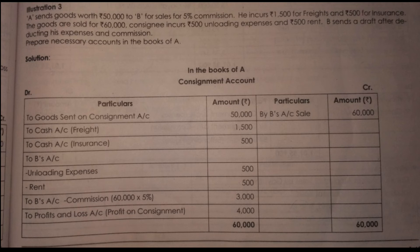If you look at the expenses, you can mention them. If you look at this transaction, expenses are added. Next, B sends a draft after deducting expenses and commission. With this basic idea from the advice, you can look at this — it is a business, the consignee as a business.